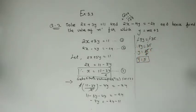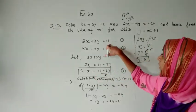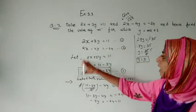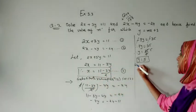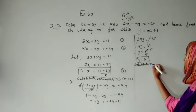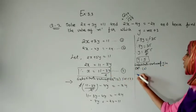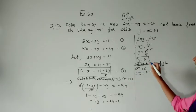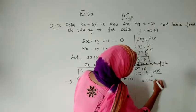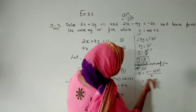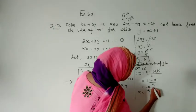Half the work is done. Now we substitute the value of y into equation number 3. We can substitute in equation 1, 2, or 3 and get the same value, but it is easier in equation 3. So x equals (11 minus 3 times 5) divided by 2, which gives (11 minus 15) divided by 2, giving minus 4 divided by 2, so x equals minus 2.